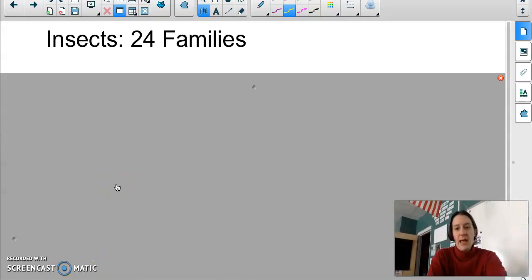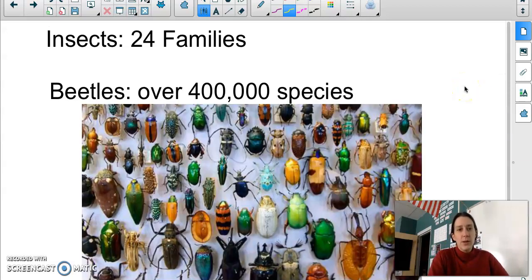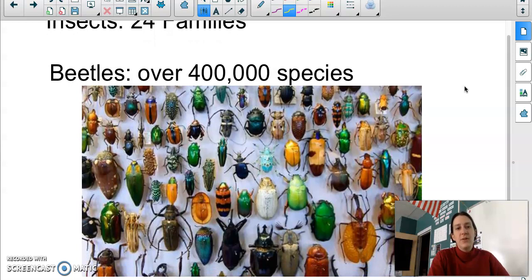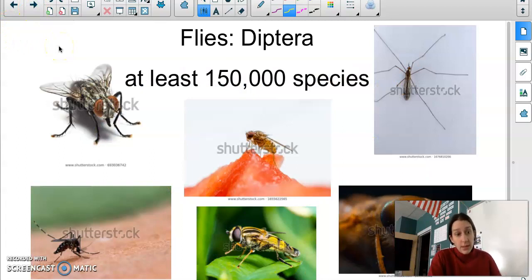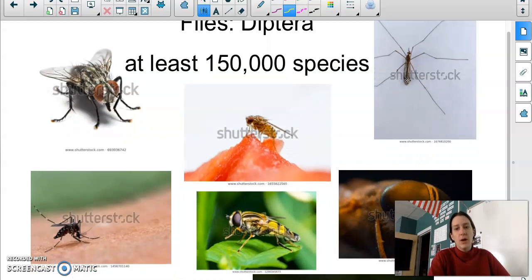So insects. There are 24 different families of insects. And there's a huge diversity in the insects. For example, beetles. One of the families of insects is beetles. And there are over 400,000 species just of beetles. And look how beautiful some of them are. They're amazing. And flies, which are diptera, there's at least 150,000 species of flies, including house flies, fruit flies, crane flies. These guys are not giant mosquitoes. They're vegetarian. They're not going to hurt you. I promise. They're probably more scared of you than you are of them.